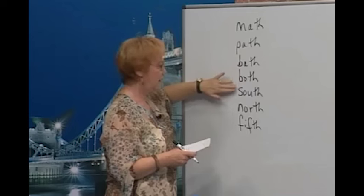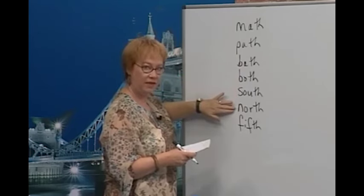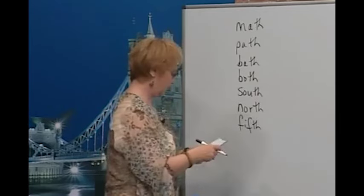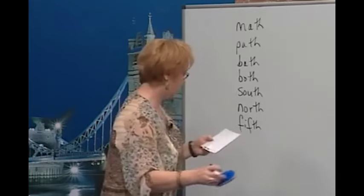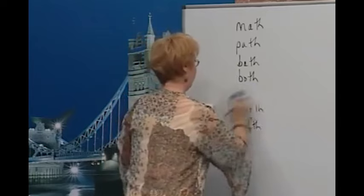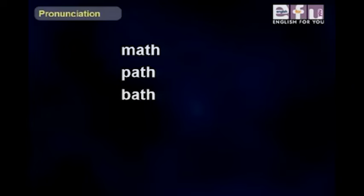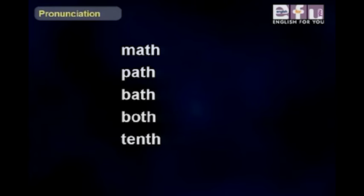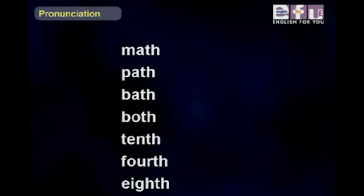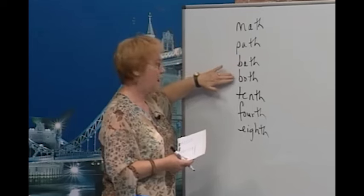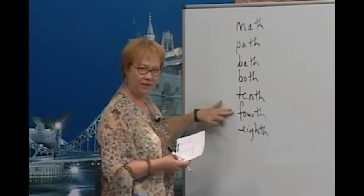Now we're going to practice some word pairs. Let's do a different group of words. Some of these are the same: math, path, bath. Let's add some more — we have math, path, bath, both, tenth, fourth, and eighth. So again: math, path, bath, both, fourth, tenth, fourth, eighth.